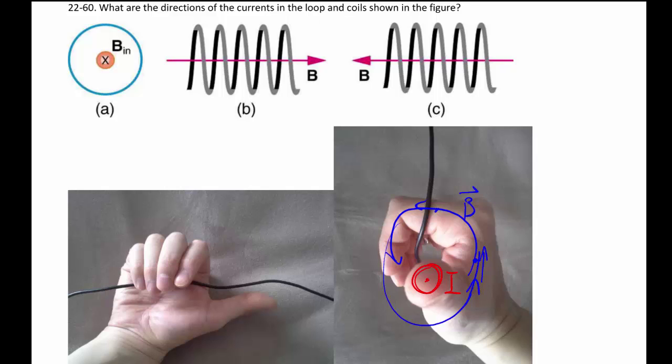And then of course, the further out of this, the weaker it is, and we'll get to that equation later. But for the direction, that's how you find it out using the second right hand rule.